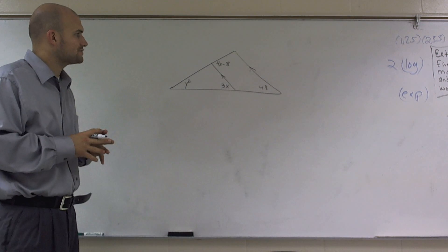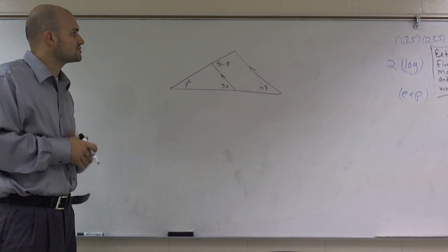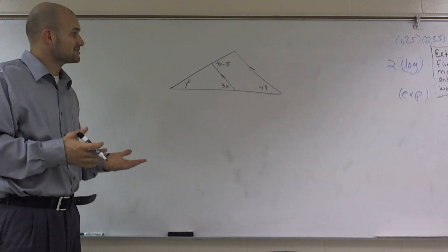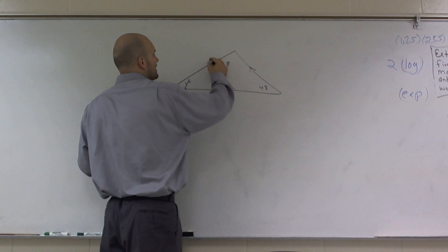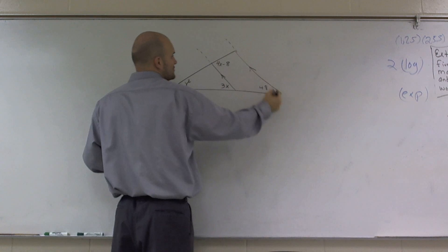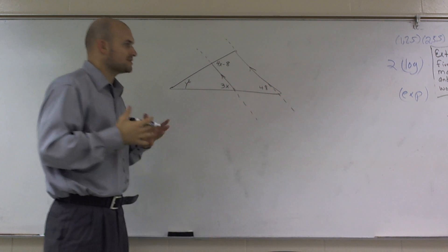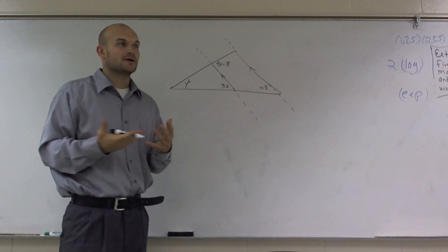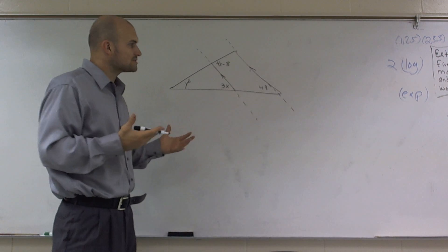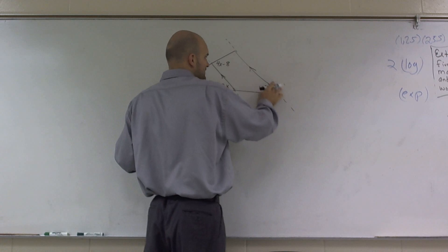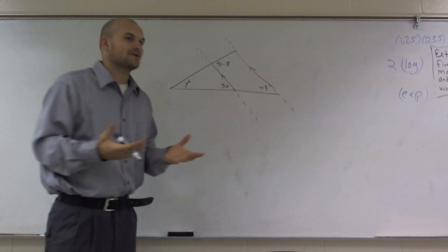OK, what I'd like to do is show you how to find the values given this triangle. Now, the special thing about this triangle is we have parallel lines, and we're going to use those parallel lines to our advantage. Because when we have parallel lines and a transversal, we can use certain definitions of angles to help us find our degrees.